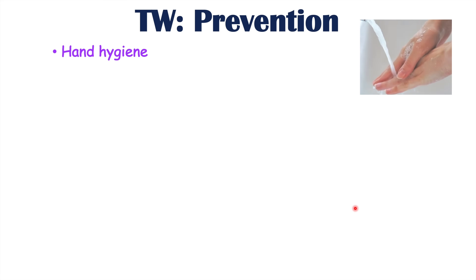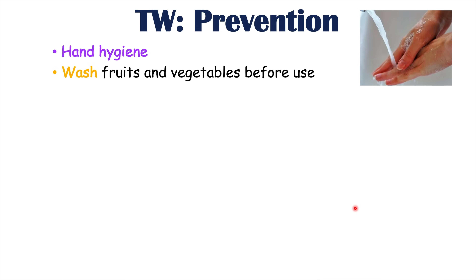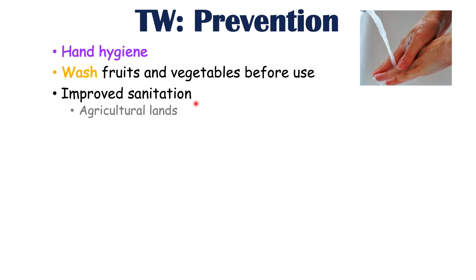To prevent a tapeworm infection, hand hygiene is very important — particularly given the cases of auto-infection discussed earlier. It's also important to wash fruits and vegetables before use, as there may be eggs or proglottids that have contaminated them. Improved sanitation in general is important, including on agricultural lands and through sewage treatment. Sewage treatment has been noted to reduce the risk of Diphyllobothrium latum infections, since eggs are released into water sources and then picked up by crustaceans.